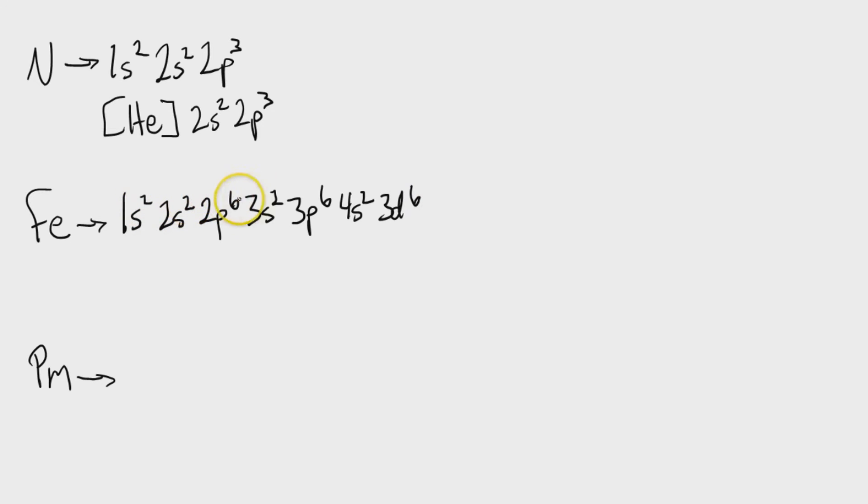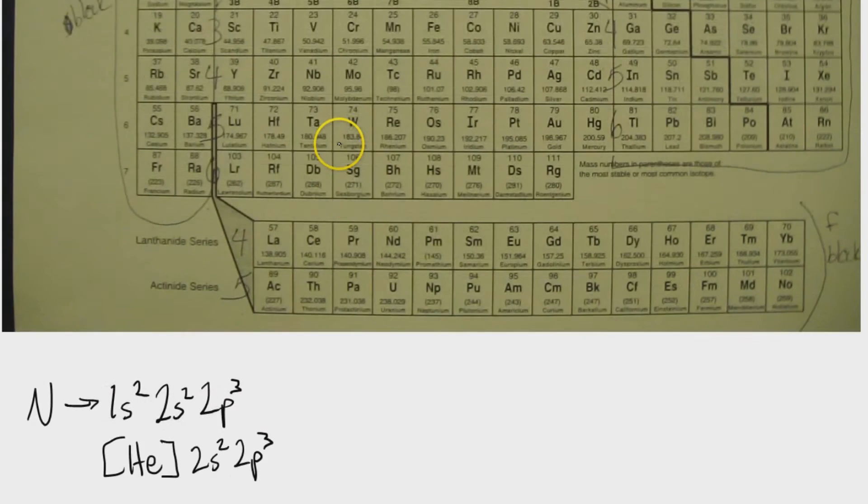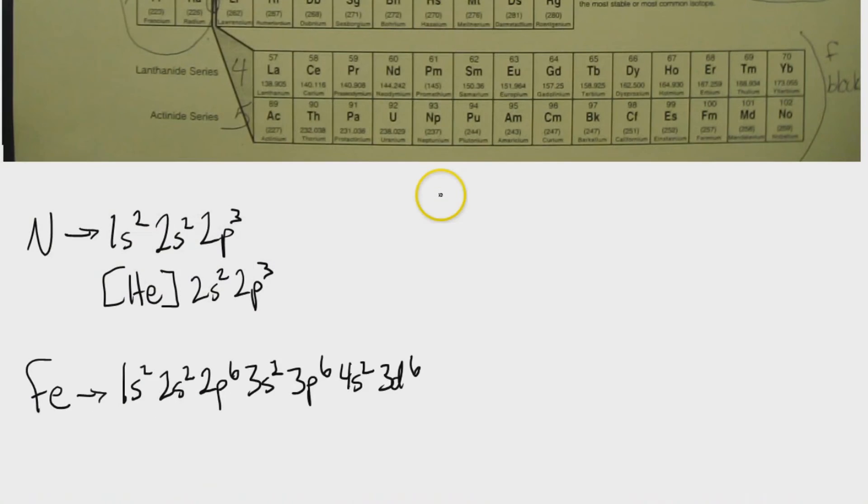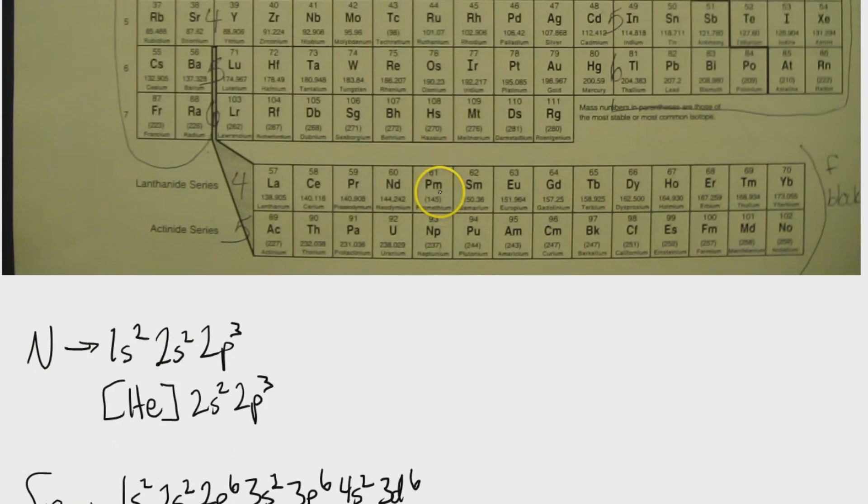And just to make sure that we have done this correctly, 2 plus 2 is 4, plus 6 is 10, plus 2 is 12, plus 6 is 18, plus 2 is 20, plus 6 is 26. And as we can see here, iron is element number 26.